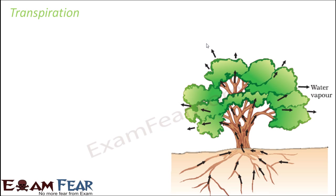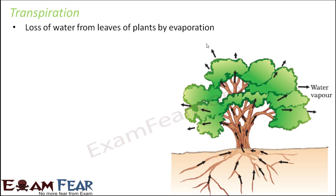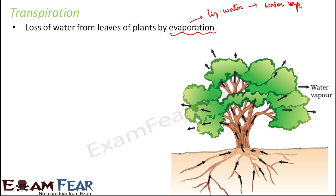When we talk about releasing excess water, that process is known as transpiration. It is the process in which excess water inside the plants is released to the atmosphere — it is the loss of water from leaves of plants by evaporation. Evaporation is the process in which liquid water is converted into its vapor form — that is, liquid water gets converted into water vapor.